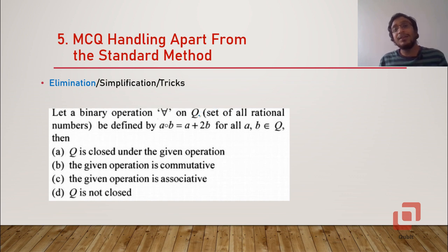Now the next one is MCQ handling apart from the standard method. By a standard method I mean the intended way to solve the problem which might be application of a theory or application of a theorem or application of a formula or using a fact. This usually works in mathematics so I'm going to explain three things. The first method is elimination. For example if you read this question from abstract algebra, option a says that q is closed under the given operation and option d says q is not closed. Now you know that it will either be closed or it is not closed which means you don't even bother to check what the options b and c are telling you. So it has to be either a or d and this is the elimination, you have successfully eliminated options b and c.